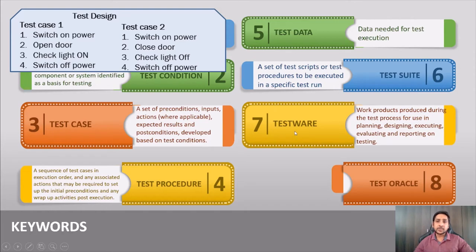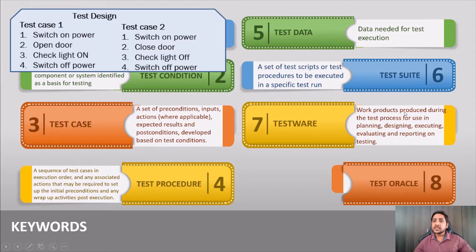Testware is whatever output you get from the testing environment. Work products produced during the test process for use in planning, design, execution, evaluation, and reporting on testing. For example, test cases, test conditions, results, test environment — everything comes under testware. Any document which we produce or get during the testing phase is referred to as testware.